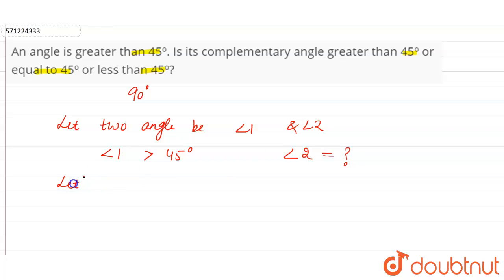In the example, we know that angle 1 plus angle 2 is equal to 90 degrees. Let's say angle 1 is greater than 45°. Let's say angle 1 is 50 degrees, and we have to find angle 2 to check the status of angle 2.